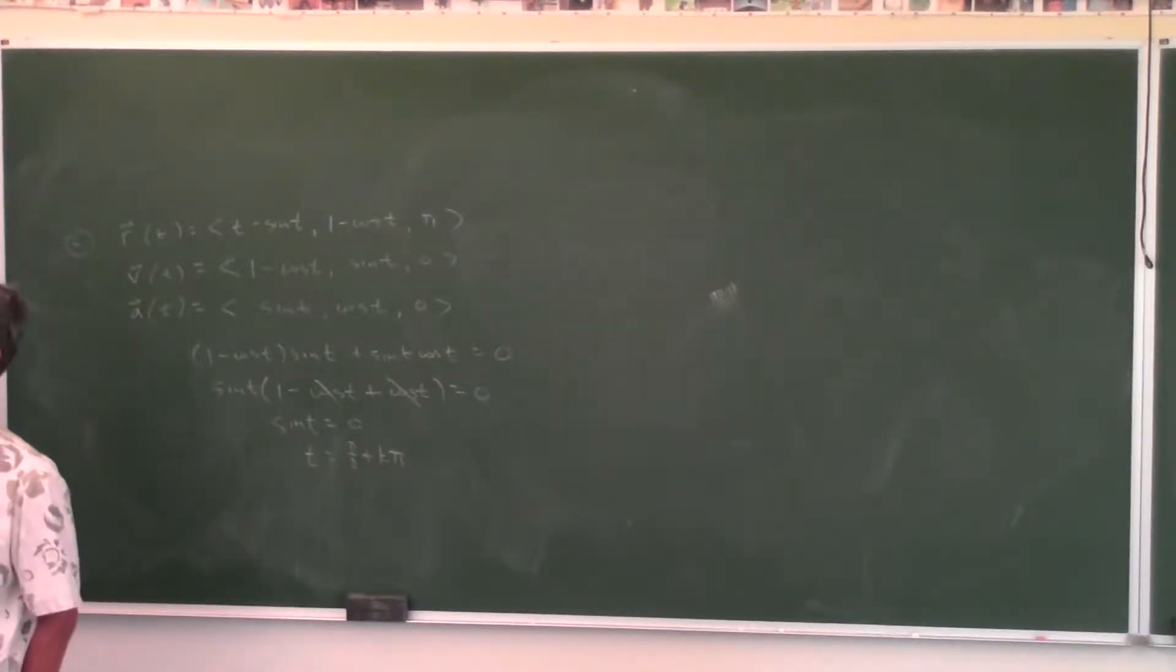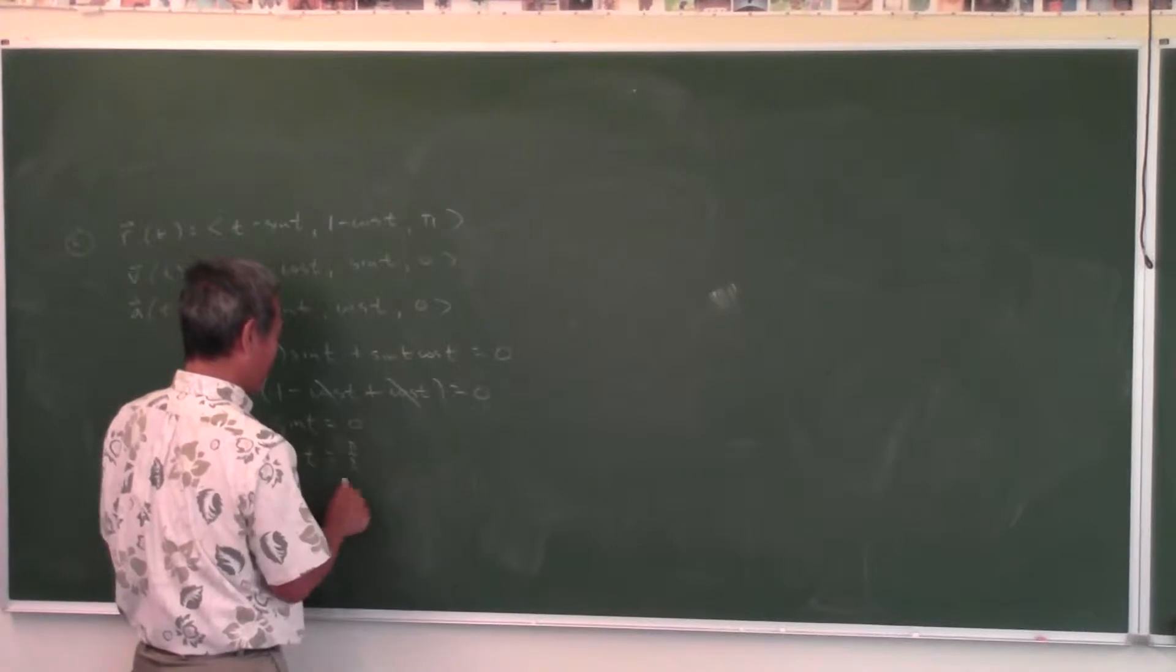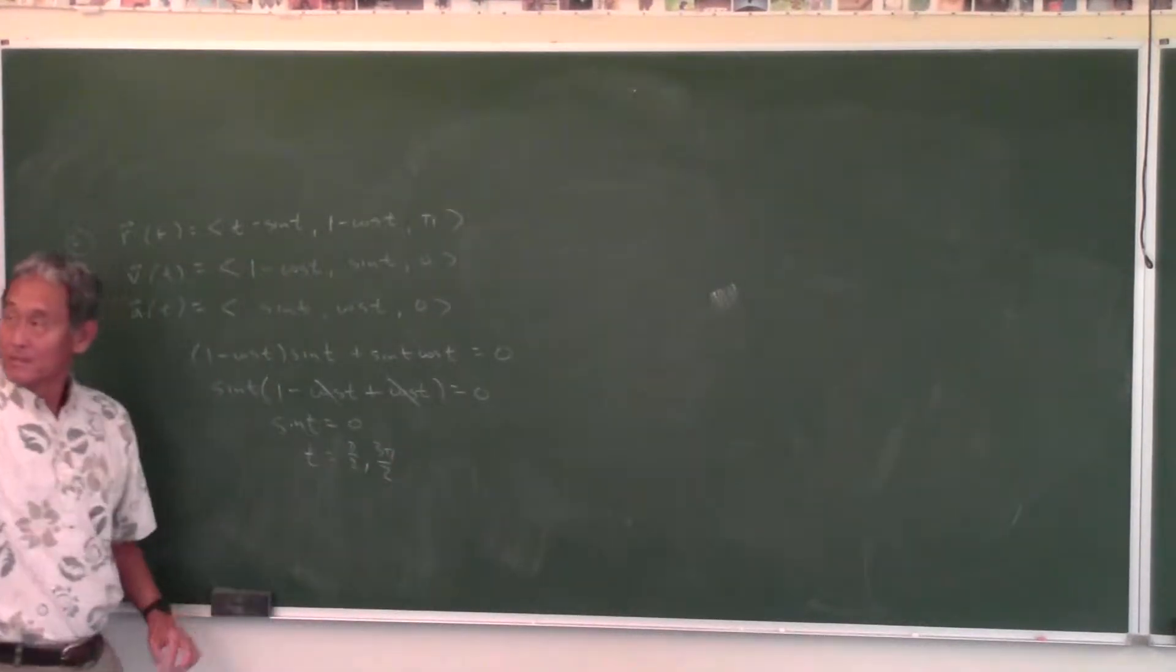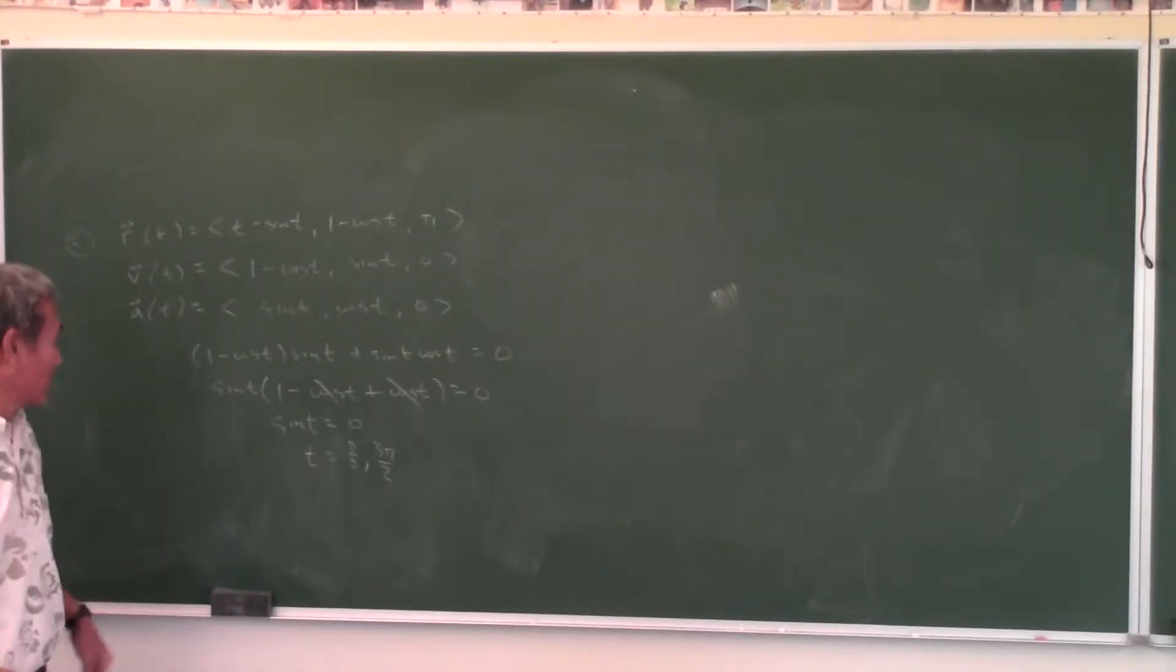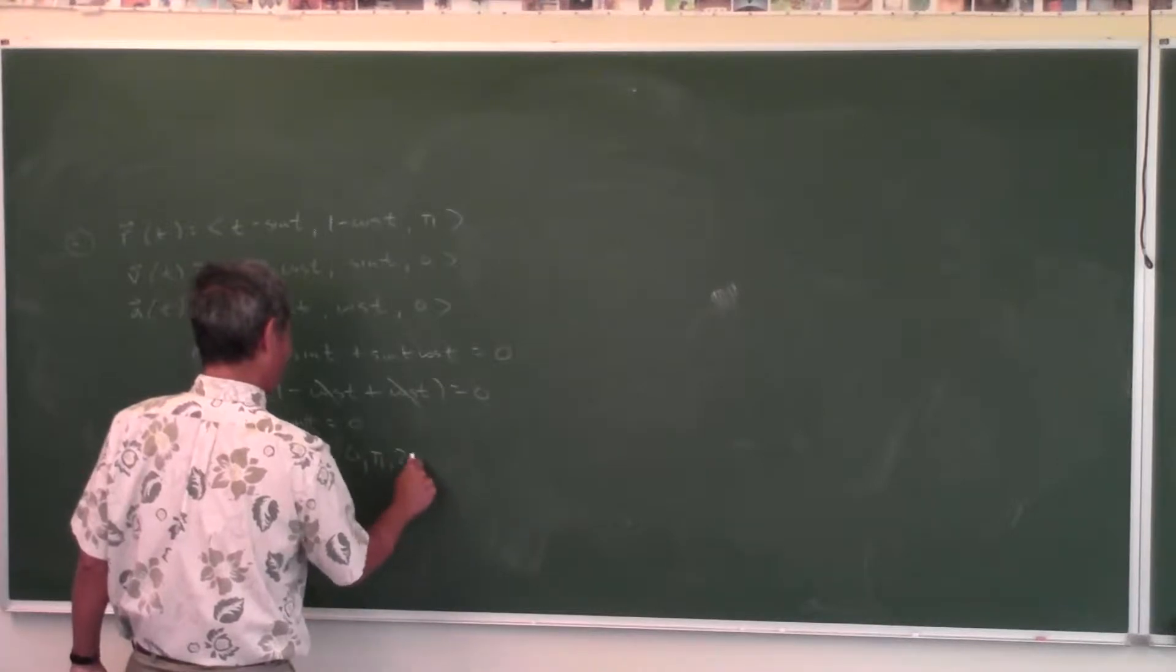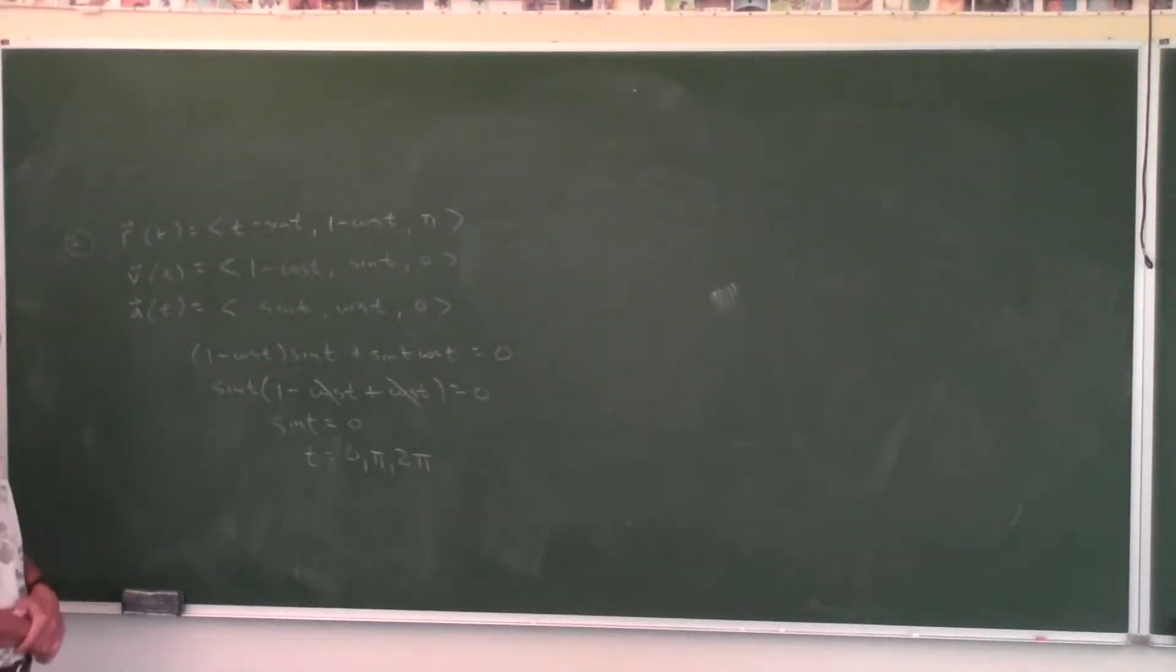What are we trying to find in this problem? At what values of t? Oh, it just says t between zero and two pi. So if that's the case, then it's just pi over two and three pi over two. It says between zero and two pi. Oh, zero, sorry. Zero, pi, and two pi. What the heck am I doing?